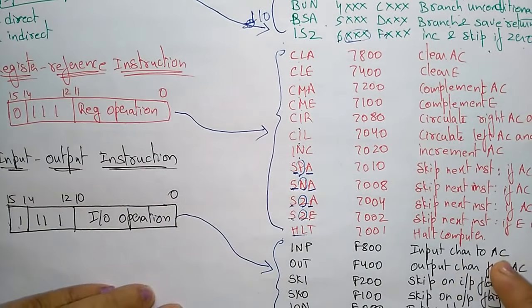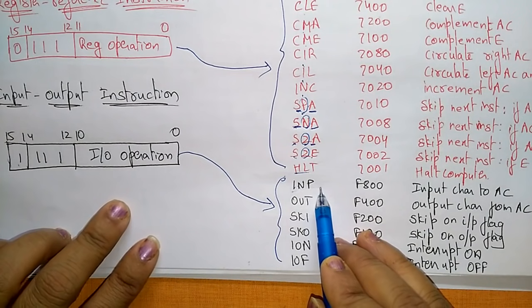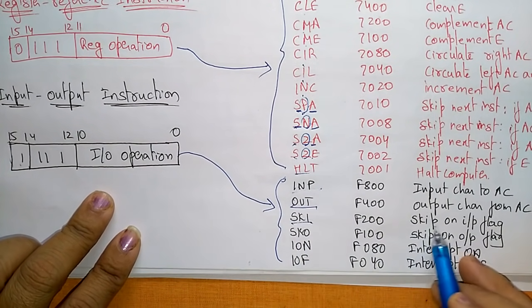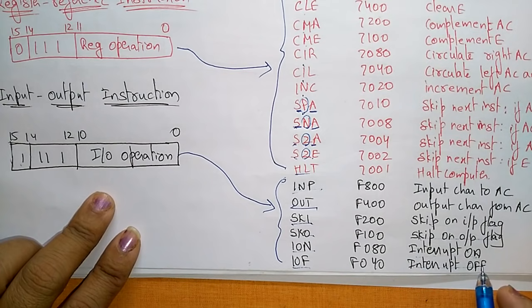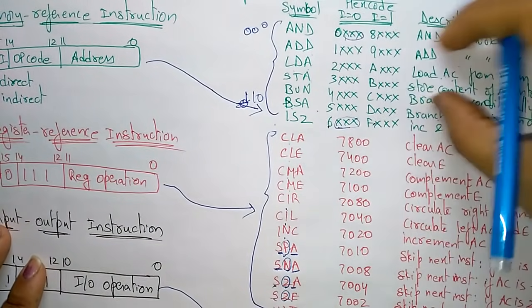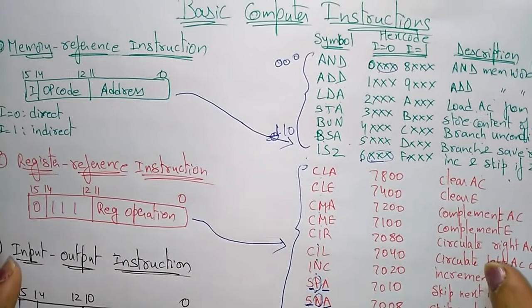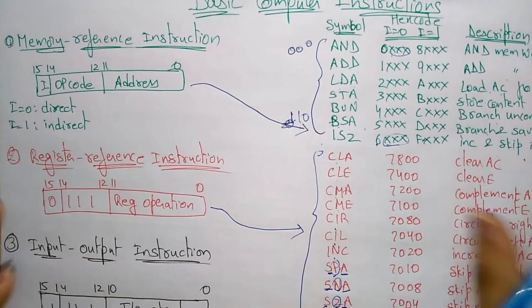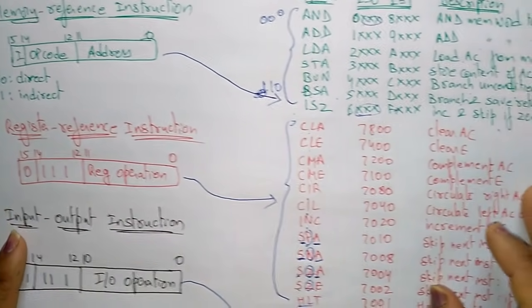The input/output instructions are: INP — input character to accumulator; OUT — output character from accumulator; SKI — skip on input flag; SKO — skip on output flag; ION — interrupt on; IOF — interrupt off. So the computer instruction formats are divided into three types: memory reference instruction, register reference instruction, and input/output instruction.